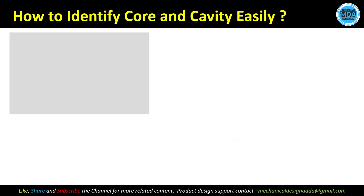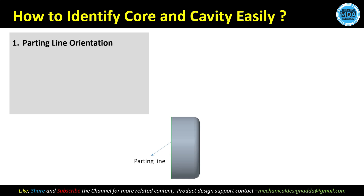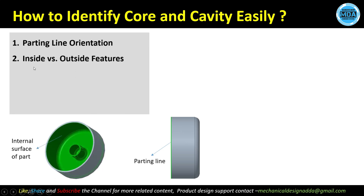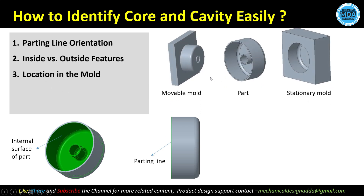Now, how can we identify core and cavity easily? Based on parting line orientation: the external surfaces or outer surfaces come under the cavity, and the inside surface comes under the core. Similarly, inside surface features come under the core and outside surface features come under the cavity.